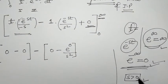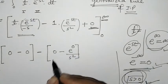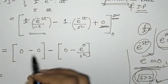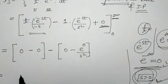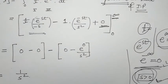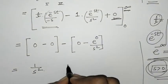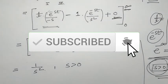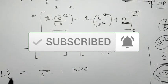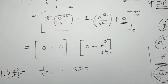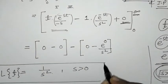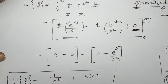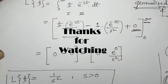So on simplification, the two negatives give a plus and e raised to 0 is 1, giving us 1 upon s squared, with the condition that s is greater than 0. In this way we have found the Laplace transform of t, which equals 1 over s squared. That's it for now — see you in the next video, thank you, keep watching.